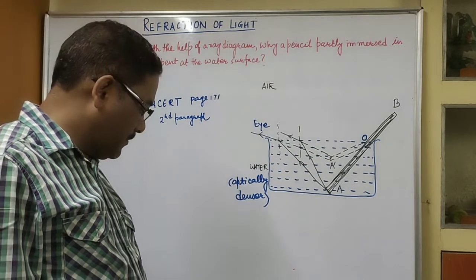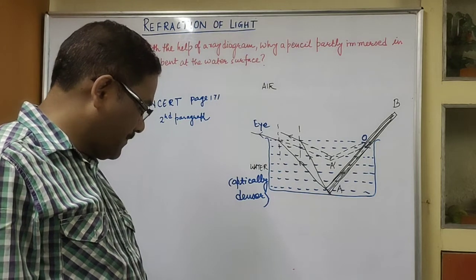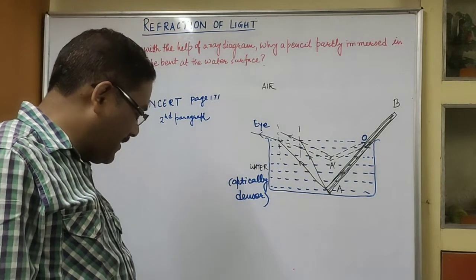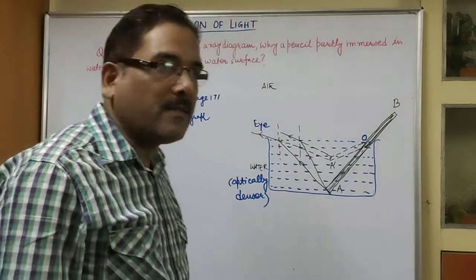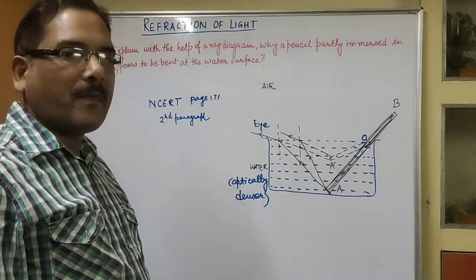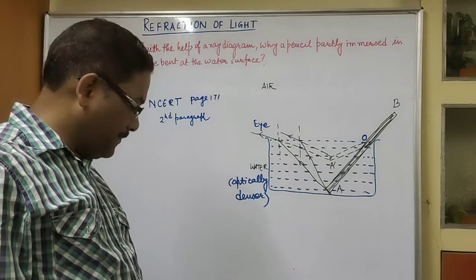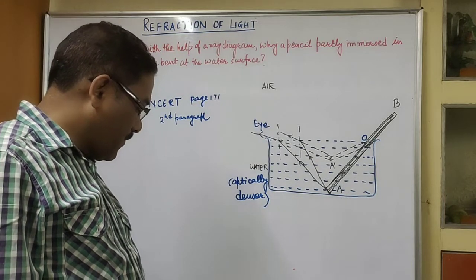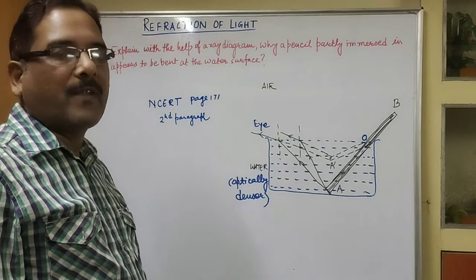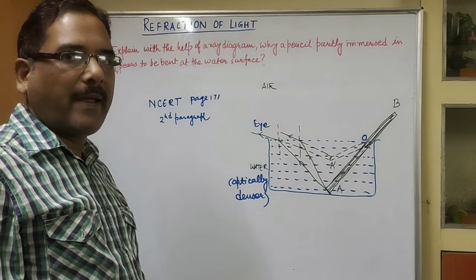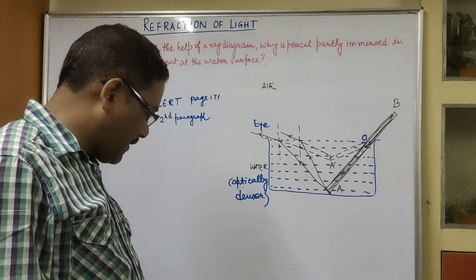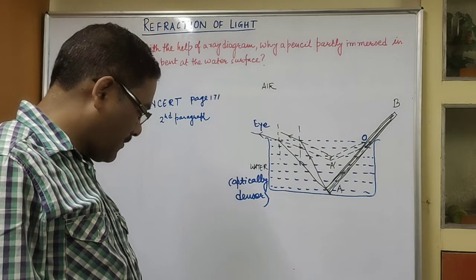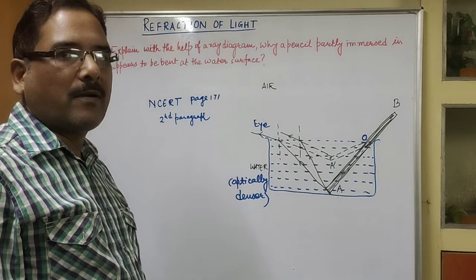The second homework question: when a thick glass slab is placed over some printed matter, the letters appear raised when viewed through the glass slab — explain why. These are two questions based on refraction of light.